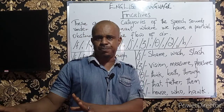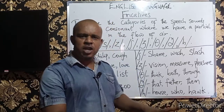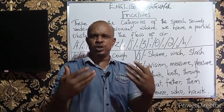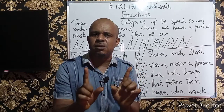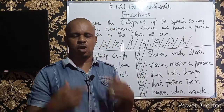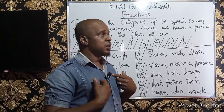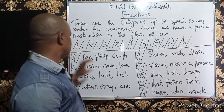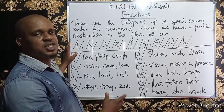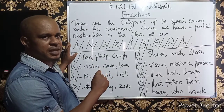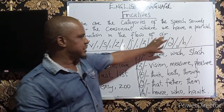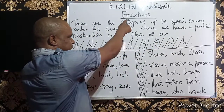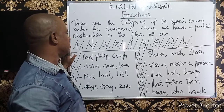That's the voiced sound. The voiceless sounds are those sounds that, when we produce them, we notice little or no vibration at all in our vocal cord. You can see what we have on the board — they've been symbolically represented. Those are the phonetic symbols of the fricatives in the English consonants.